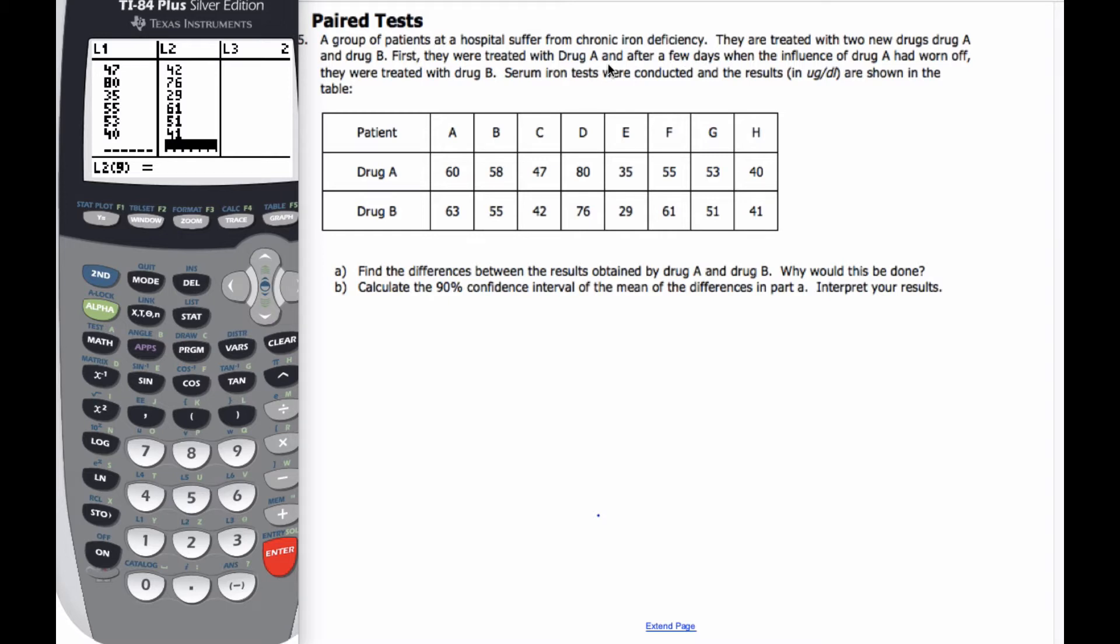First, they're treated with drug A, and after a few days, when the influence of drug A has worn off, they're treated with drug B. Iron tests were conducted, and the results are shown in the table below.